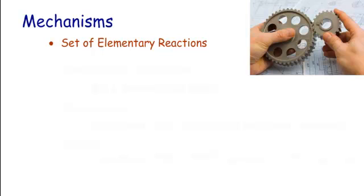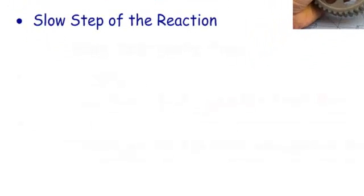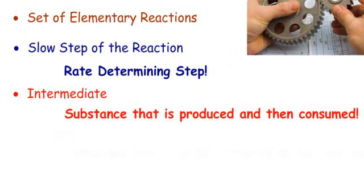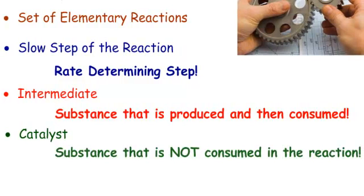We also have a thing called mechanisms. All mechanisms mean is that the reactions we see are made up of a lot of tiny little elementary reactions — just some steps. The slow step of the reaction is the rate-determining step. An intermediate is a substance that is produced and then consumed right away. And a catalyst is a substance that is not consumed in the reaction — it's there at the beginning and at the end, there to either lower the activation energy or provide a different pathway for the reaction.